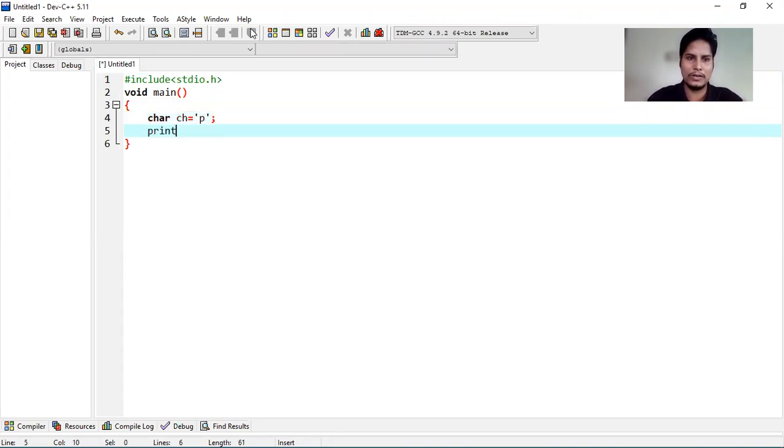So now I'm using printf statement to display what variable ch holds. Character is equal to percentile c, double quotation mark, comma, and I'm writing ch, semicolon. This is complete.